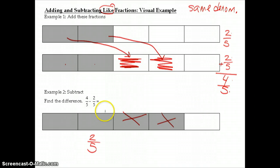In this case with subtraction, four minus two is two, and denominator of five stays the same. So we can see with these examples why visually this makes sense.